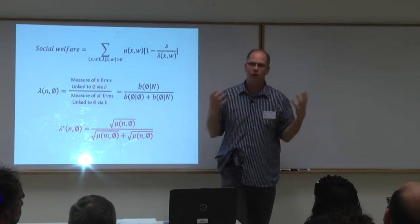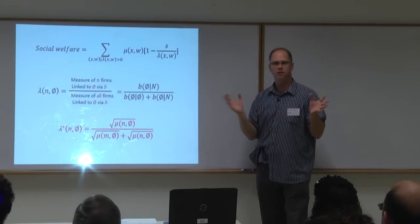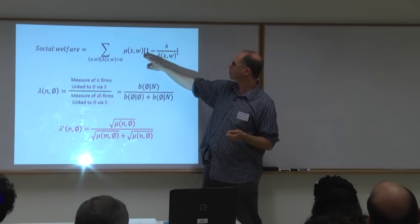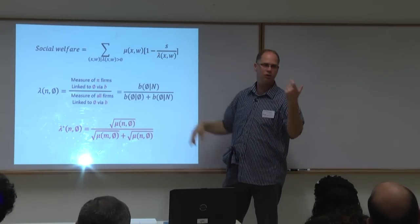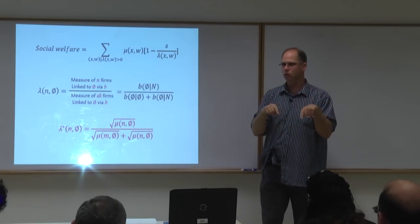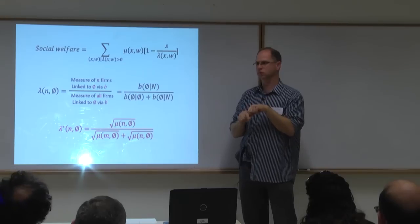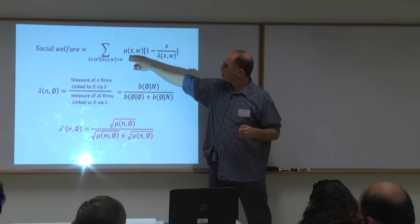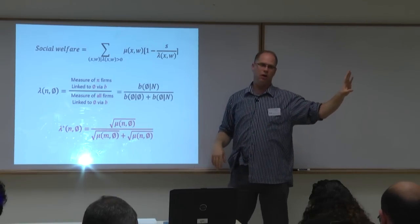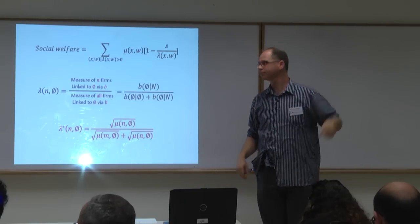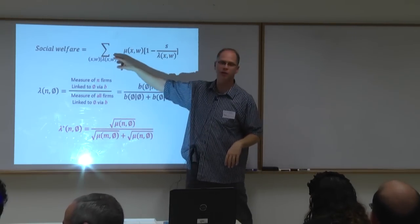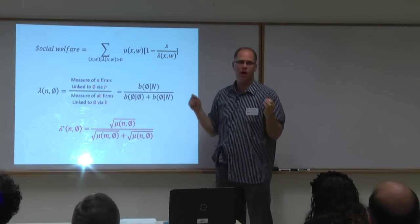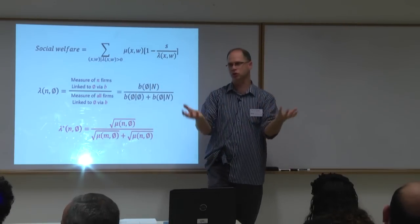The benevolent search engine's optimization problem is to maximize consumer welfare. For every consumer in the market, they get payoff one minus search costs. Lambda(X,W) is the fraction of firms of type X in the search pool associated with query W — that determines expected search cost for consumer type (X,W). Those who don't enter the market get zero. Social welfare is just the aggregate over consumer types.